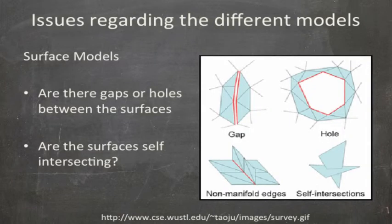Now we have the issues regarding the different models. For surface models, make sure that there are no gaps or holes between each surface. If there are, you have to use a model editor to help fix the holes and gaps. Next, check whether the surfaces are self-intersecting, as you can see from the image on the right. If you have such a problem, you do need a model editor — either Magix or NetFab.